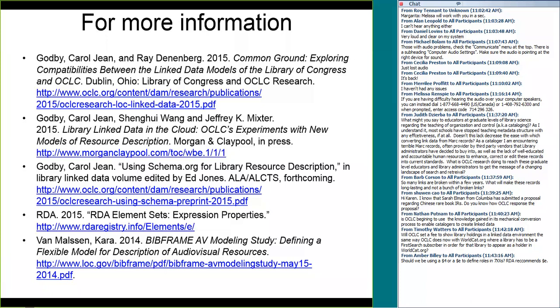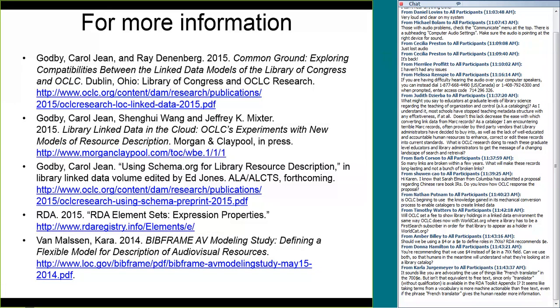There are a couple more questions. 'So many links are broken within a few years — what will make these records long-lasting and not a bunch of broken links?' Broken links are an issue, but one of the things the linked data paradigm forces us to think about more rigorously is that a uniform resource identifier in the linked data world is designed to be globally unique and persistent. In the process of publishing URIs, you essentially sign on to a contract that you are making that URI persistent.